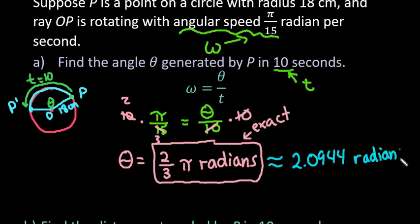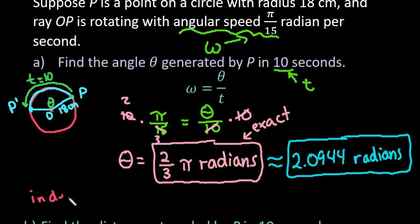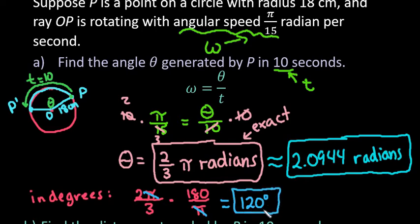Remember that if you were trying to convert this, because sometimes they may say convert it to degrees, remember that to convert it to degrees, so if you need theta in degrees, remember that we would just take the 2 thirds pi, and I'm just going to write it as 2 pi over 3, and then we would multiply it by 180 over pi. So the pi's would cancel out, and then we would just take 2 thirds of 180, which ends up being 120 degrees. So if it wanted the answer in degrees, you would convert it from radians to degrees.